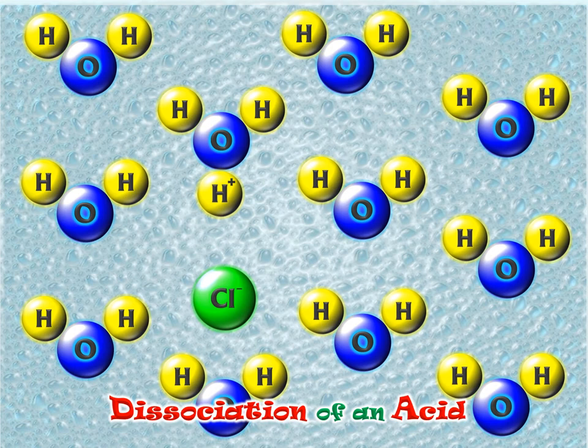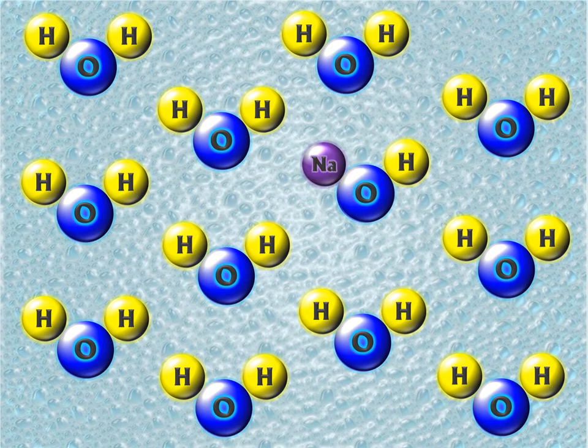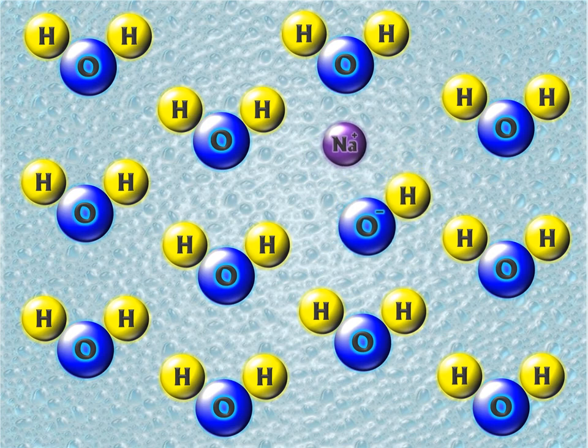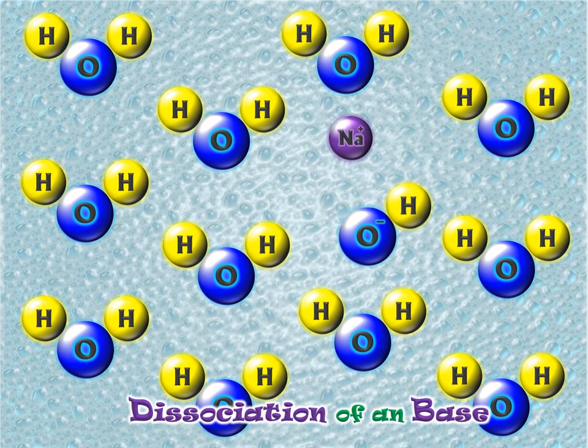Now let's look at the dissociation of a base — at least an Arrhenius base, for simplicity's sake. Bronsted-Lowry bases generate hydroxide in a different way, but let's stick with this one. The water molecules are going to rip it apart, because water molecules pull on everything, and if something isn't as strong as a water molecule, it gets ripped apart. And we've just generated hydroxide — which is why sodium hydroxide is considered a base.